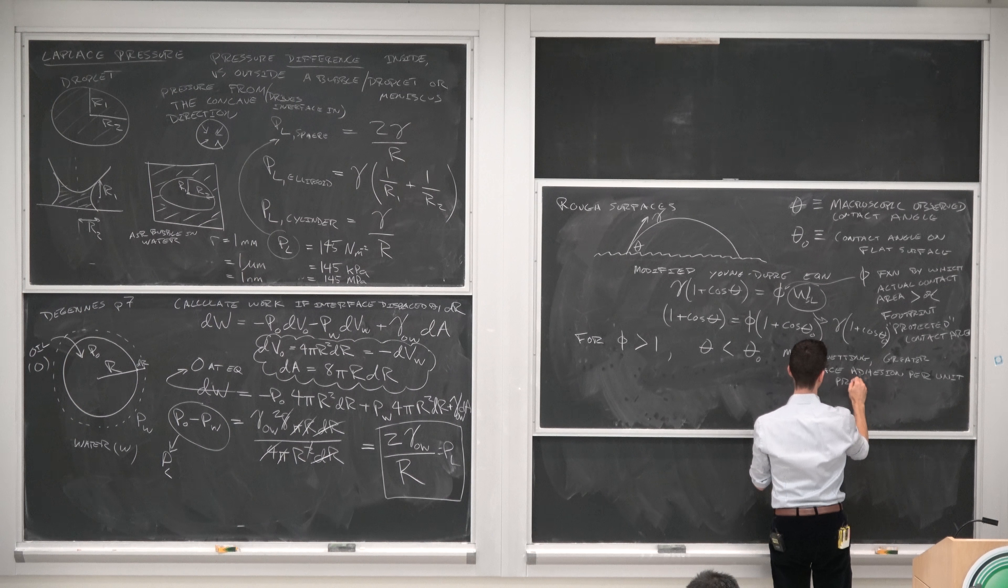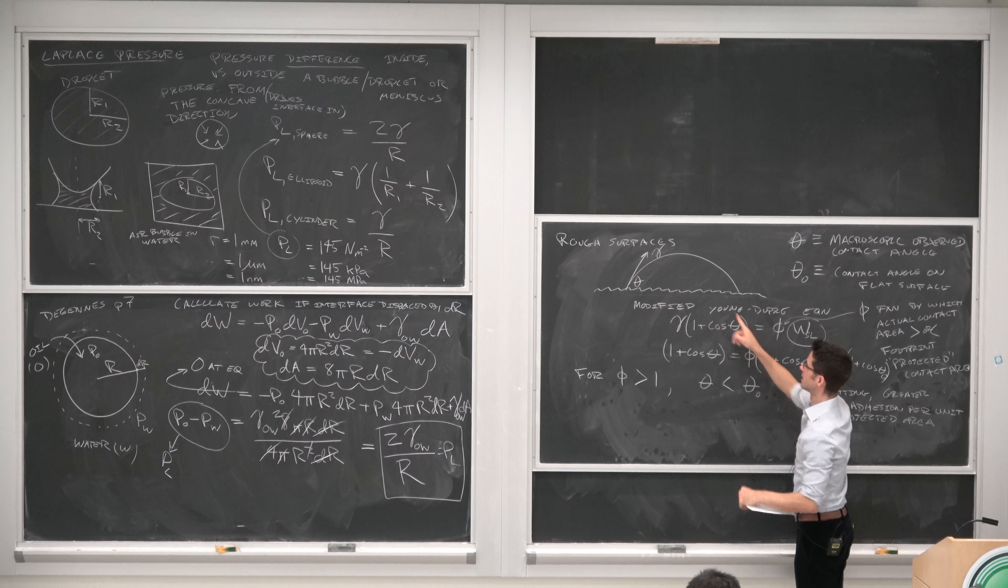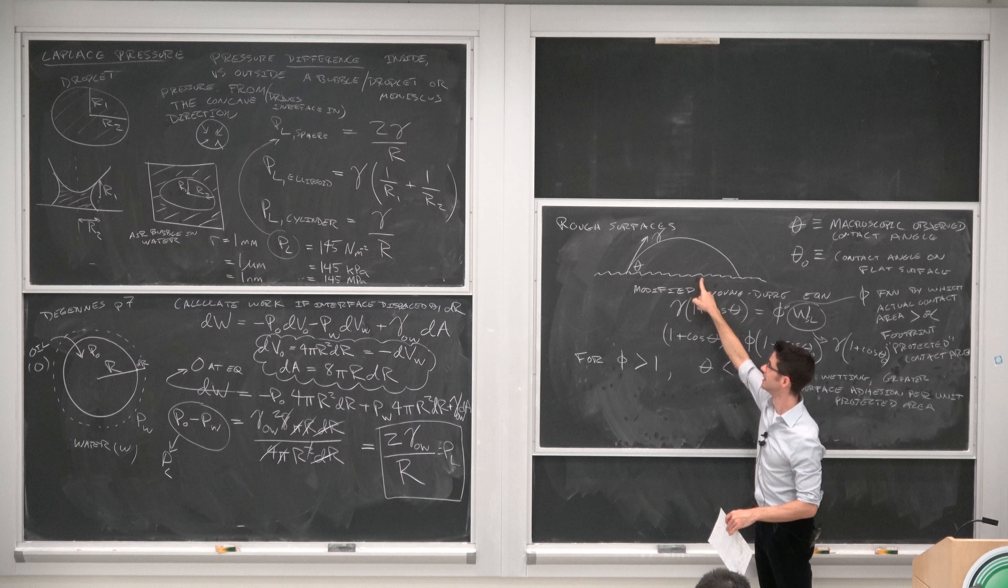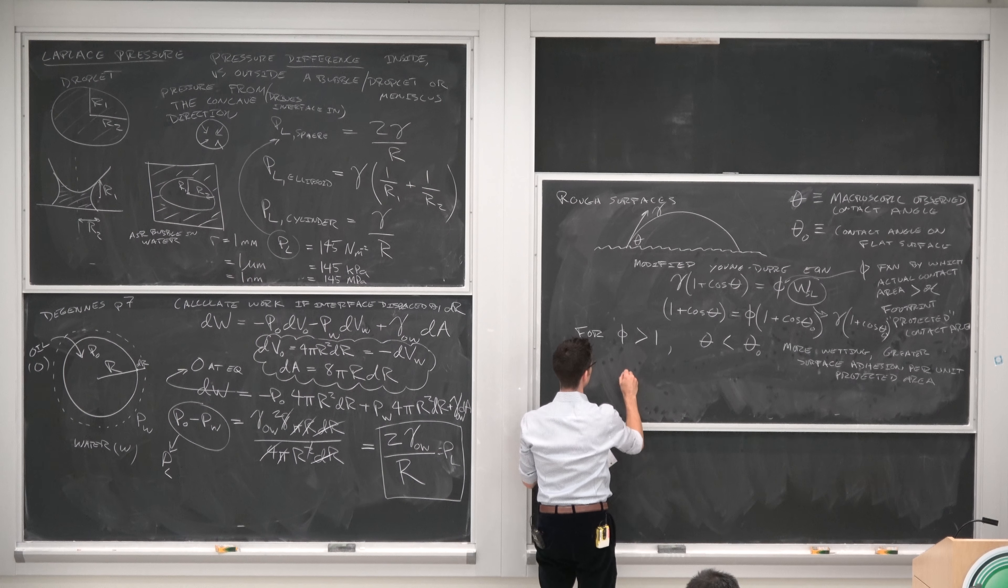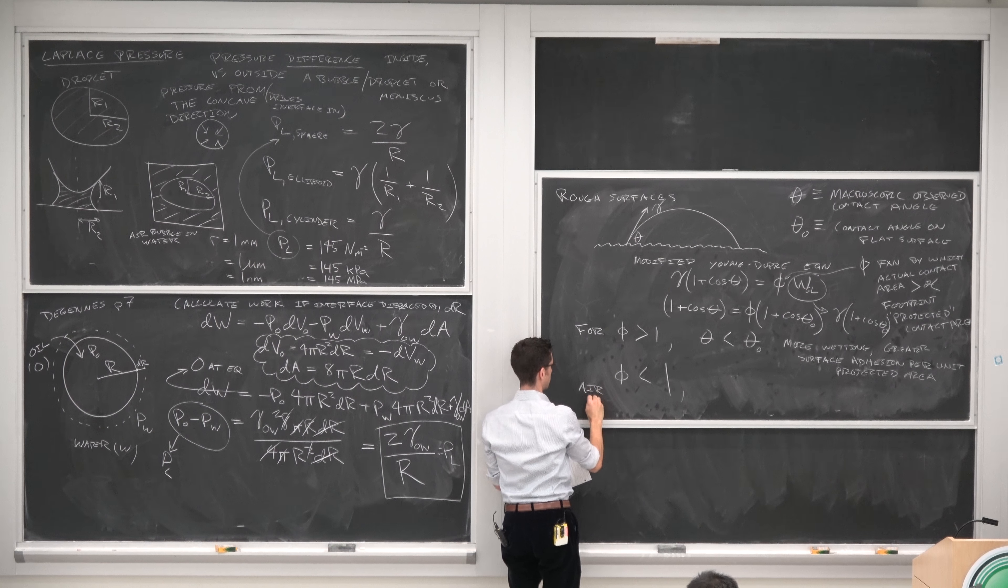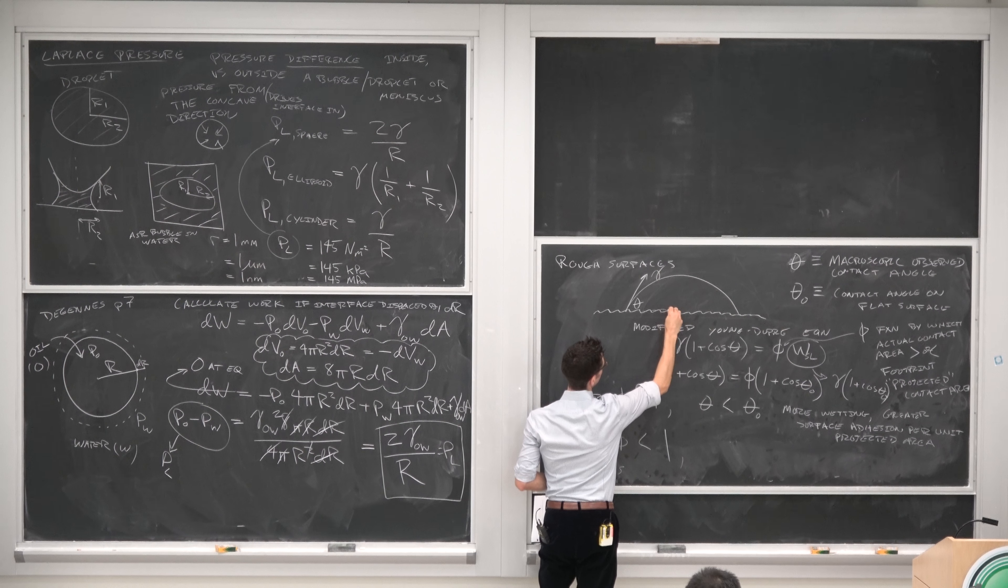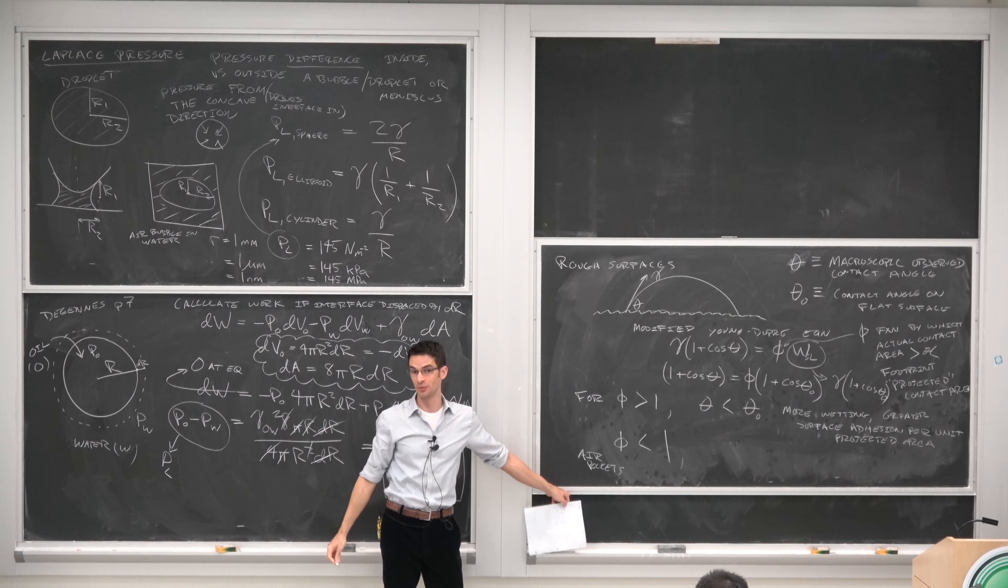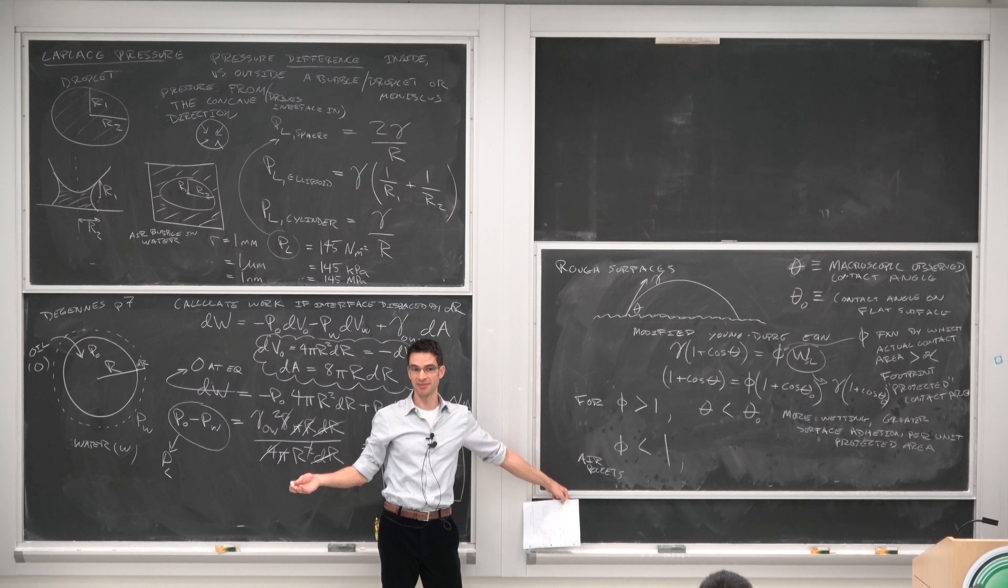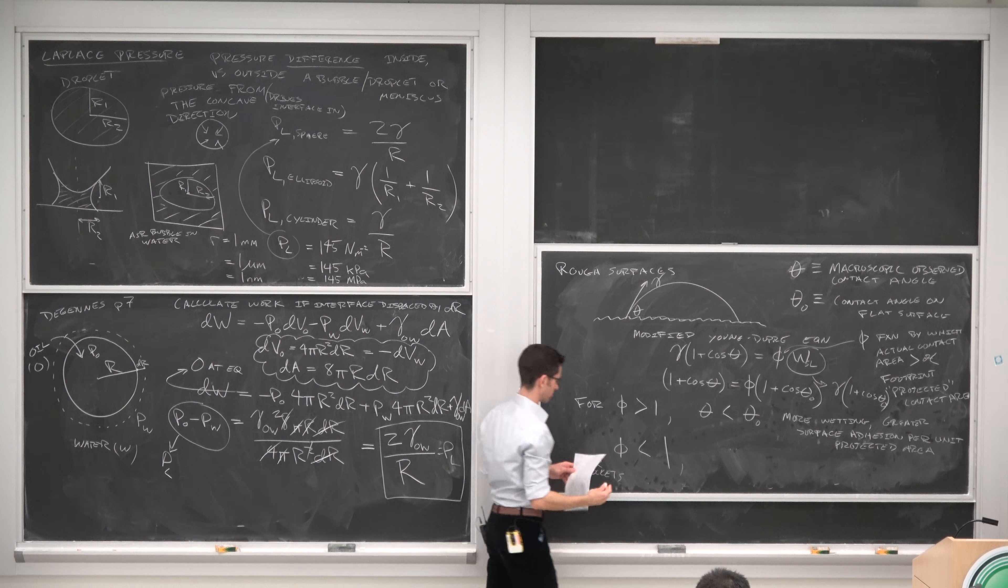Per unit of projected area than the projected area, because we have all of these asperities in the flat surface. Now suppose we have phi less than 1, and you might get this with air pockets. Say, instead of this scenario, you had a scenario like this, where the bubble, where there was air underneath it. Now air is hydrophobic, so you might have kind of a composite surface that's really the surface plus the air that's trapped underneath. And you might therefore get a less wetting surface, which is generally what you get.